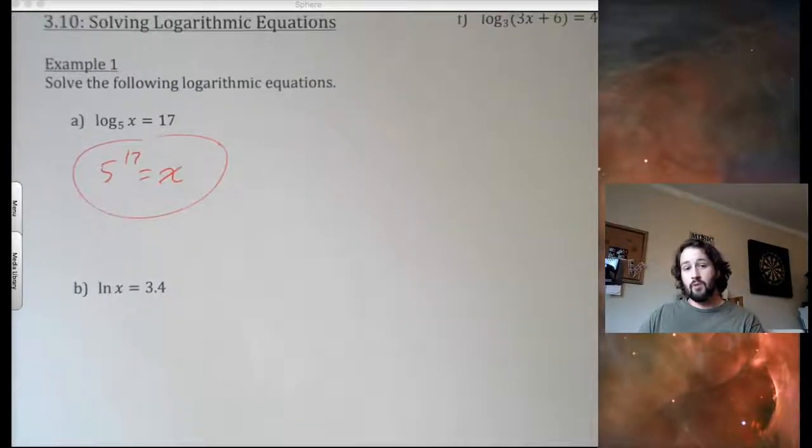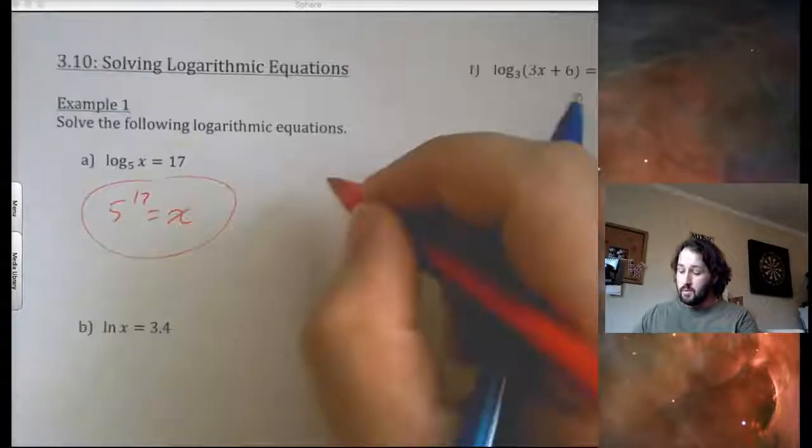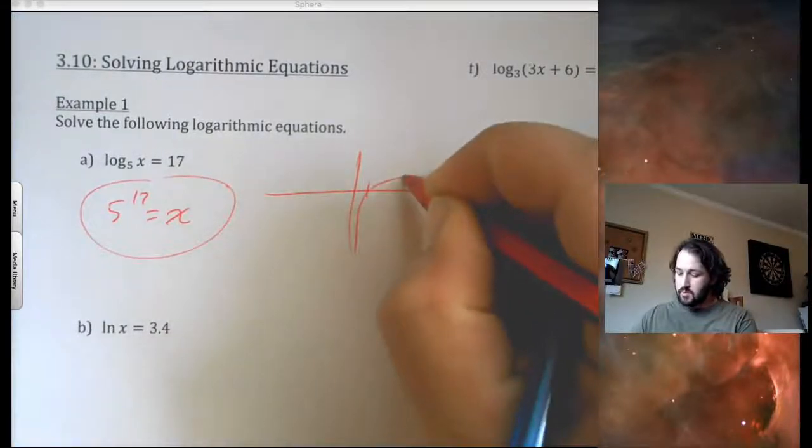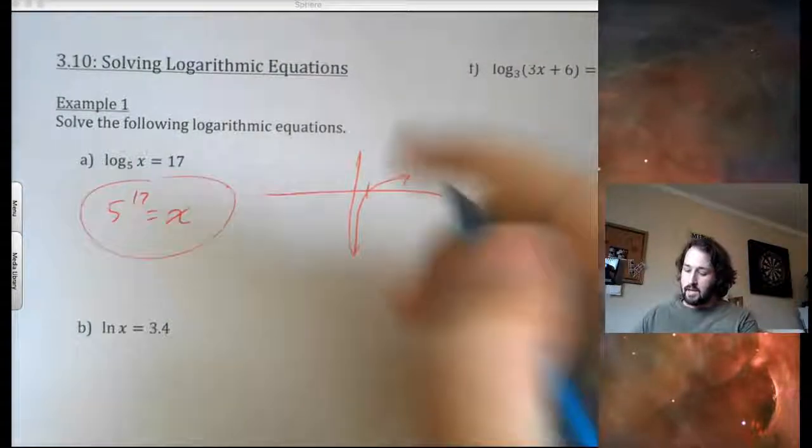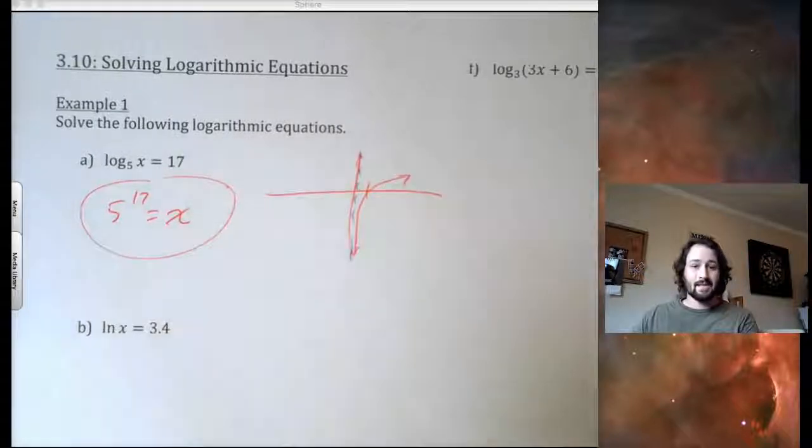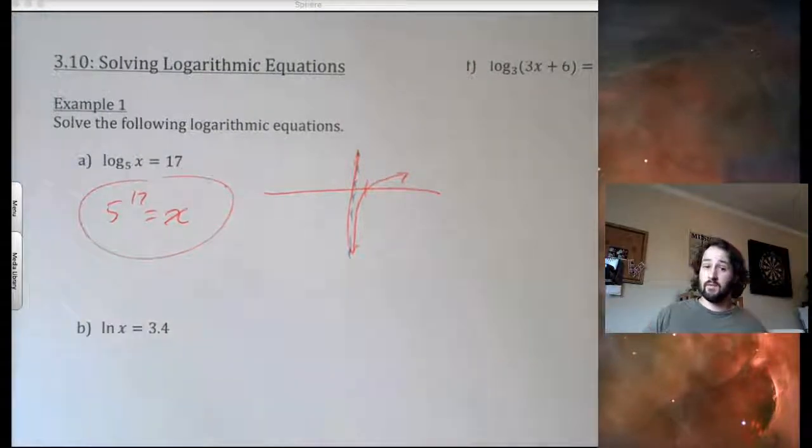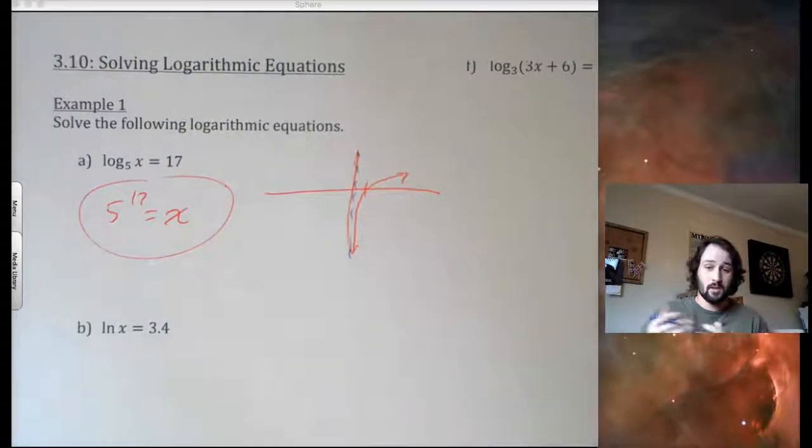Biggest thing that we're going to be on the lookout for here is we cannot be taking log of a negative number. Now, the reason why that is, if you think about your log function, whether it's increasing or decreasing, we had a vertical asymptote at x equals 0. So, we cannot have negative solutions. You cannot be taking log of a negative number. You can't have negative solutions, just log of a negative number.